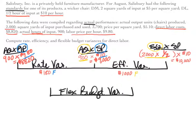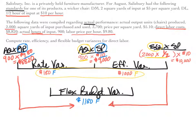Before we start interpreting our variances, let's get the flexible budget variance. There are two ways to get this variance. We can combine the two variances — because they're the same sign, both favorable, we can add them together — giving us an overall flexible budget variance of one thousand one hundred and eighty, favorable. The other way is to take the difference in peg one and peg three: actual labor cost was eight thousand eight hundred twenty dollars and the budgeted cost was ten thousand dollars. We actually incurred less labor than we thought, so it's a favorable variance.